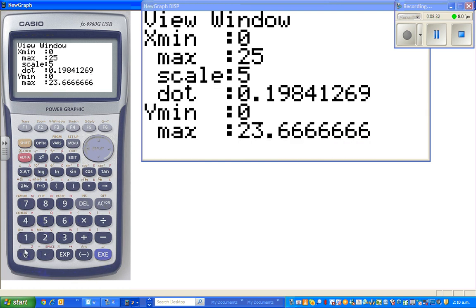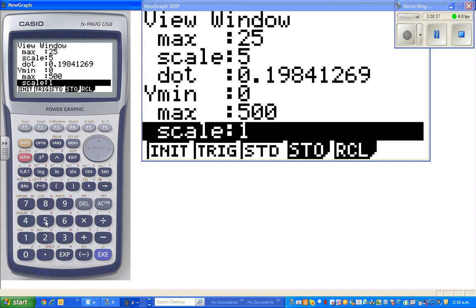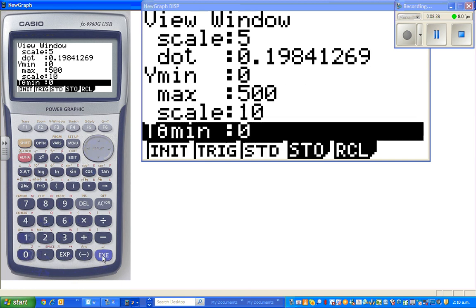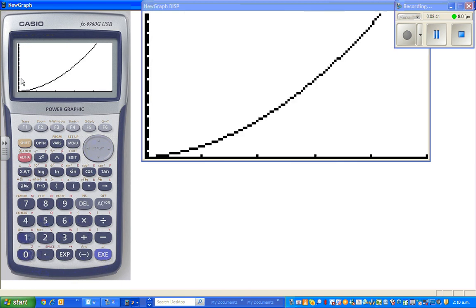Don't worry about the dot. I'll go from 0 to 500, scale of 10 would do. And then draw it. So here's my curve. It's a parabola.